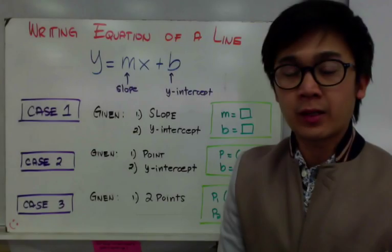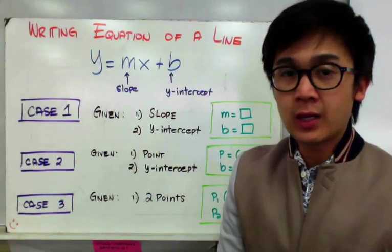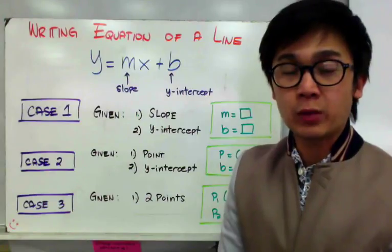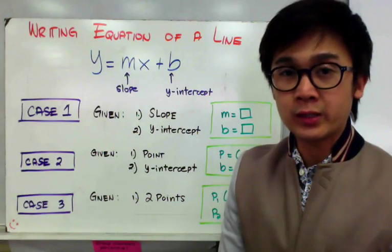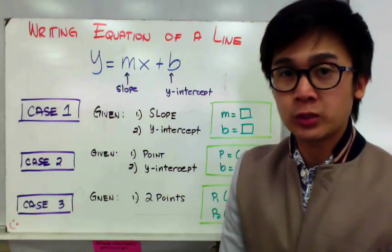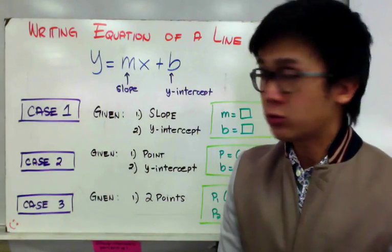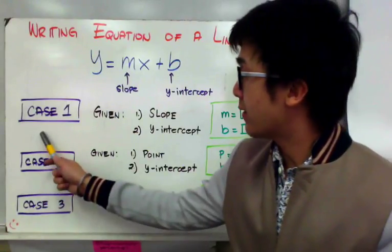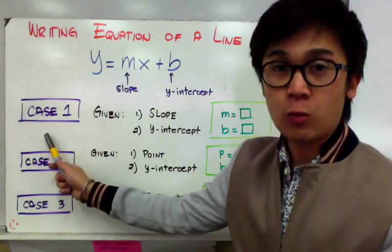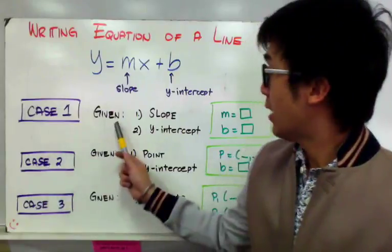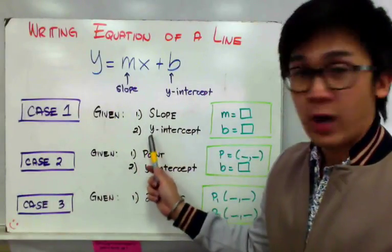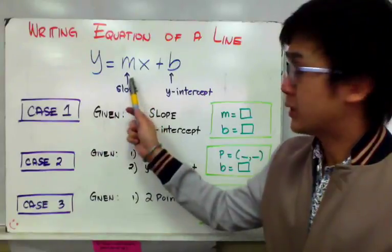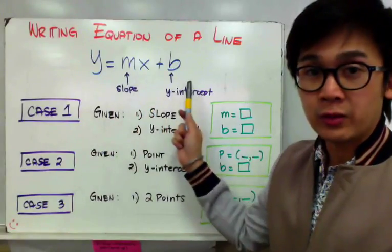We already know that in writing an equation of a line in slope-intercept form, we will need our slope and y-intercept, and by direct substitution, we'll be able to write our equation of a line. We will consider that as our first case, or case one, wherein we are given the slope and the y-intercept, and we just need to do direct substitution.